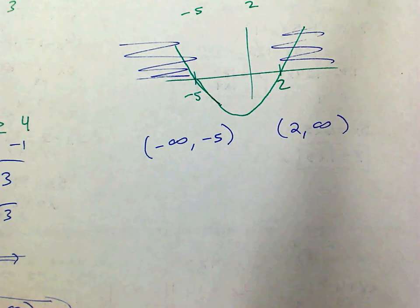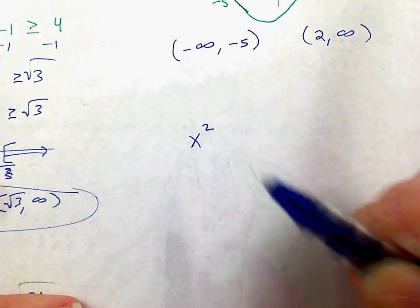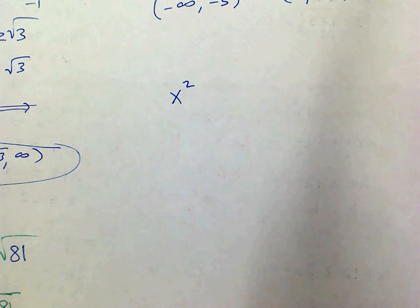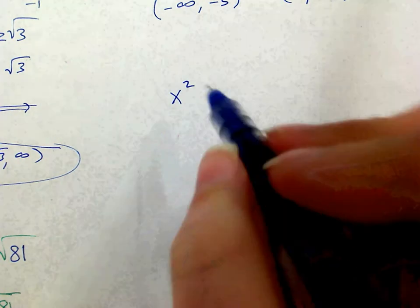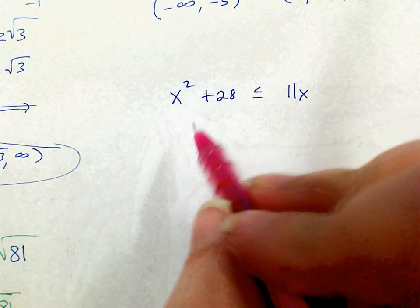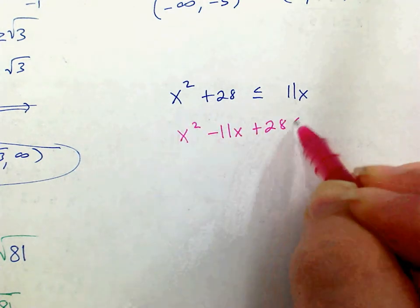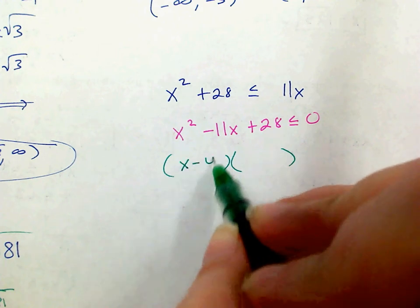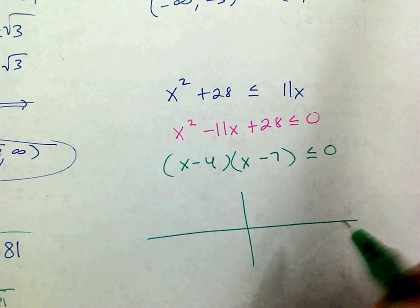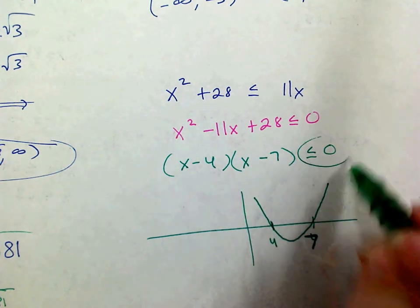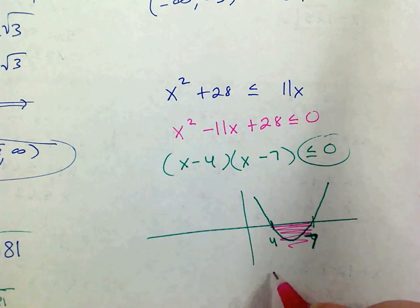If I'm solving x squared minus 11x plus 28 less than or equal to 0, I get everything on the same side: x squared minus 11x plus 28 ≤ 0. I factor: factors of 28 that add to negative 11 are negative 4 and negative 7, so the roots are 4 and 7. It's a positive quadratic that opens up — it's less than or equal to 0 between 4 and 7. So my answer is from 4 to 7, both included because of the equal-to sign.